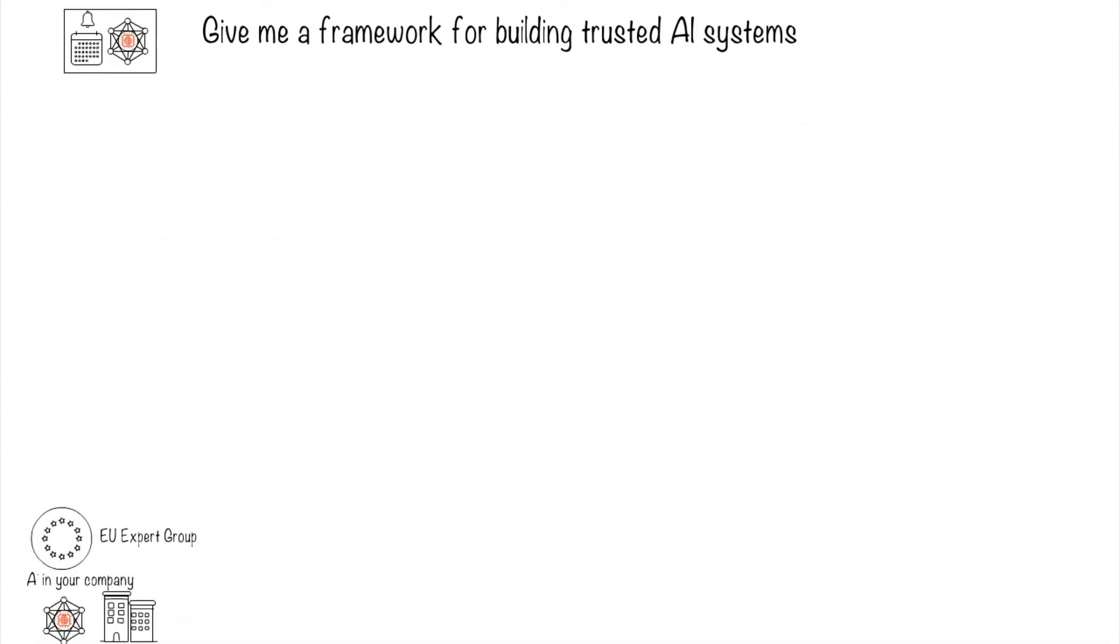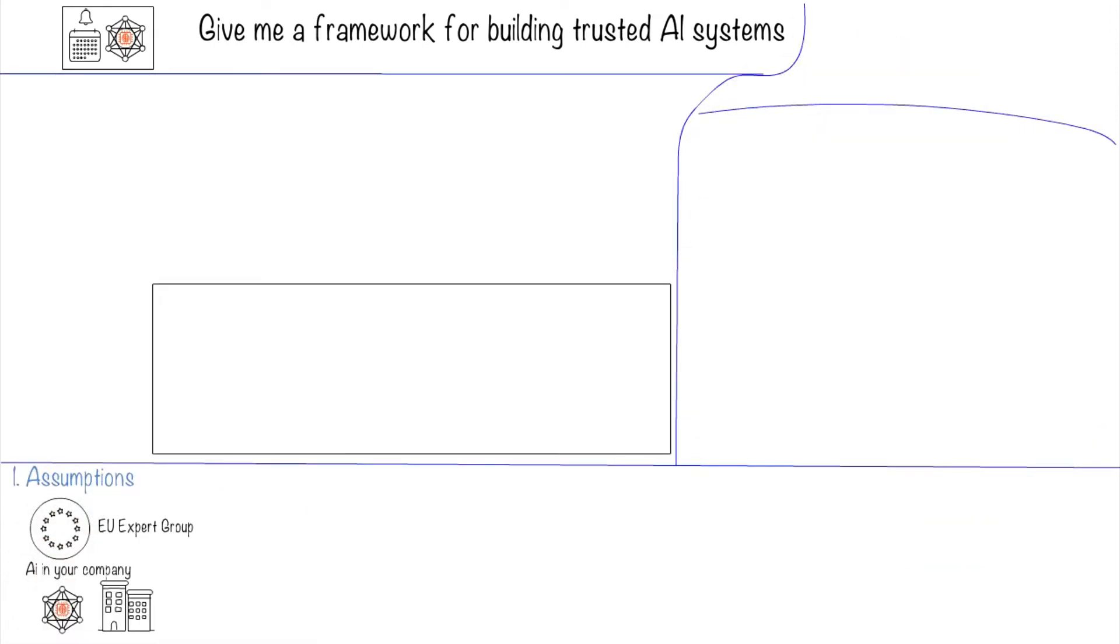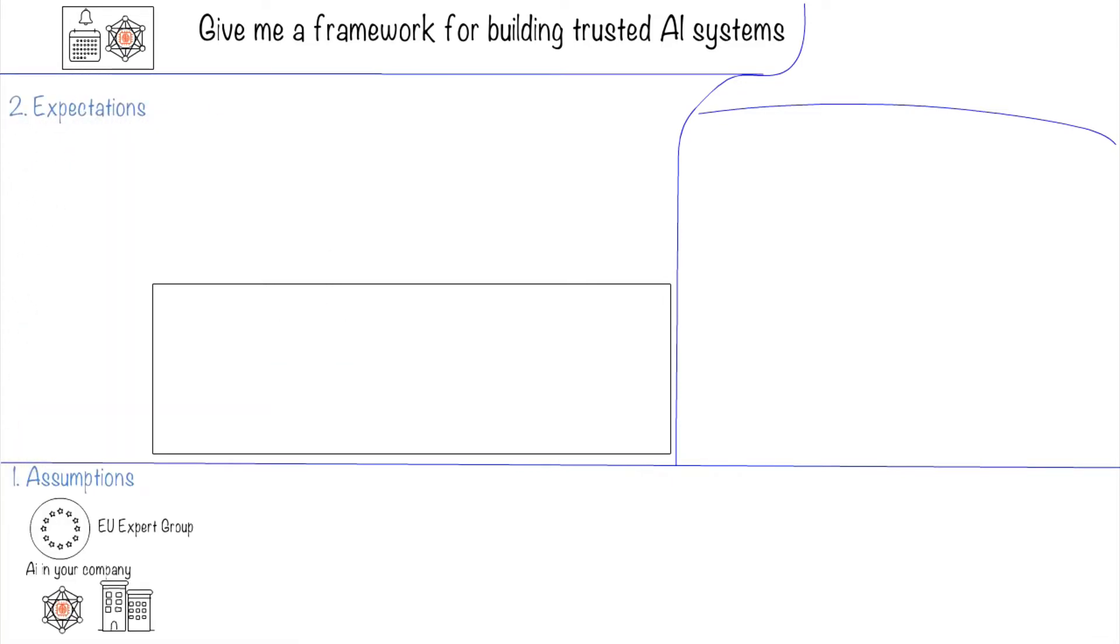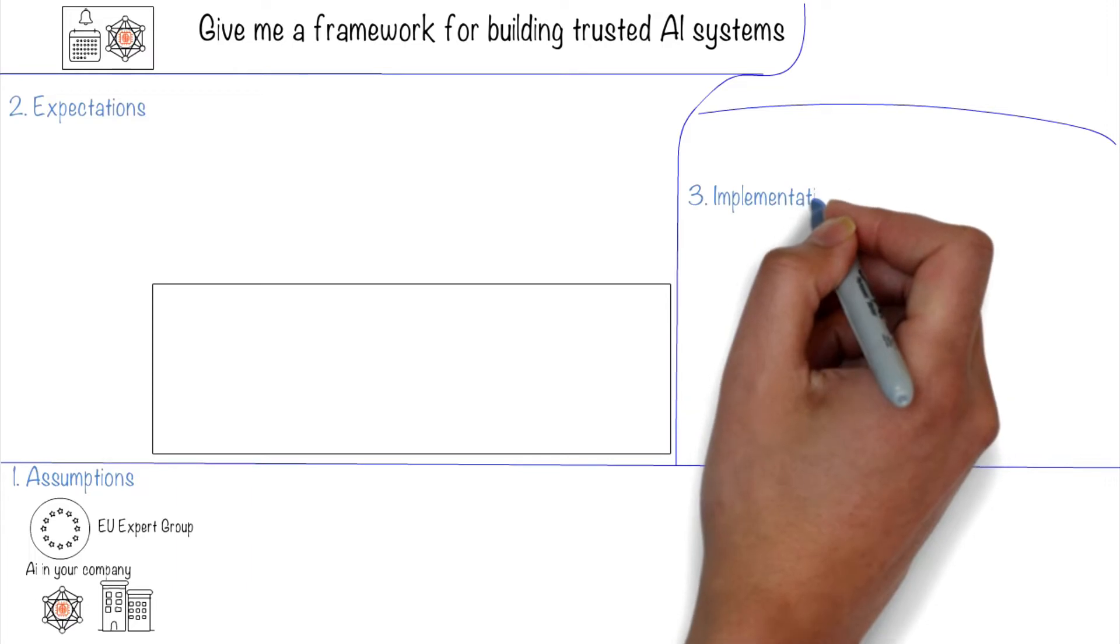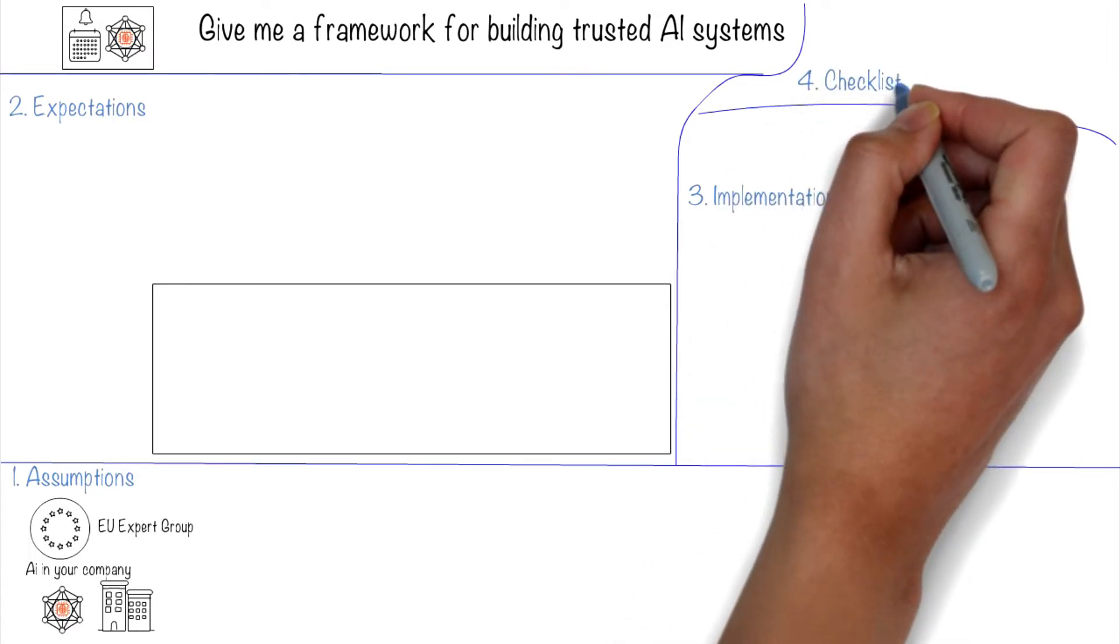I'll cover four major parts of the framework: assumptions and background, the system expectations, implementation considerations, and a checklist for trustworthiness.